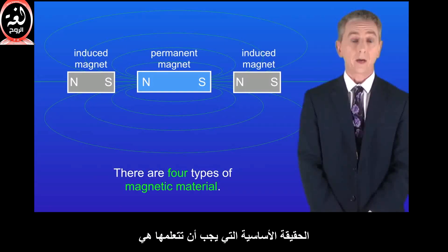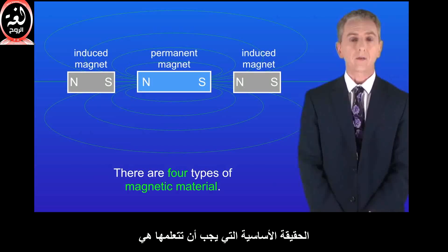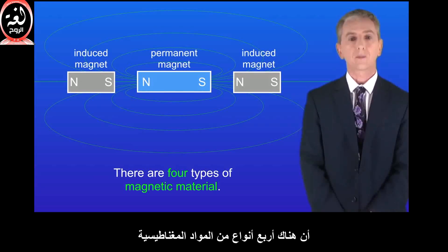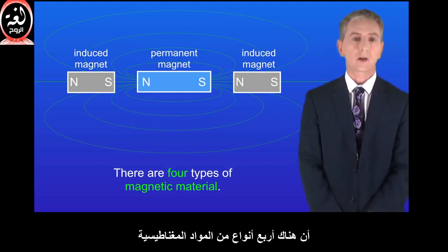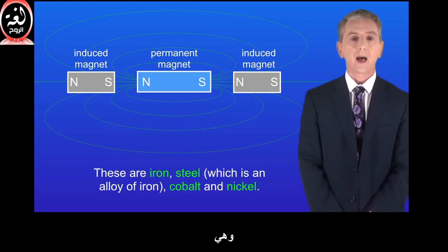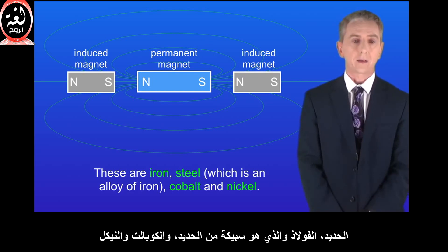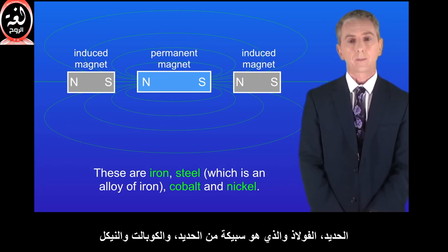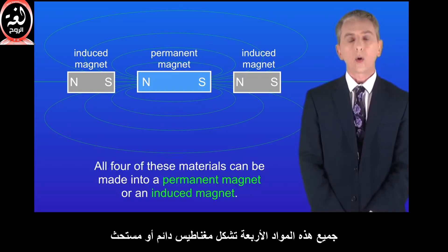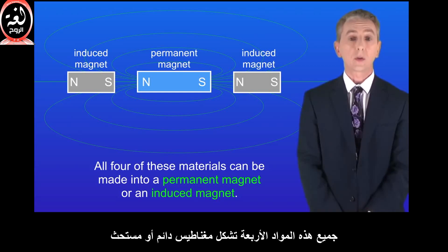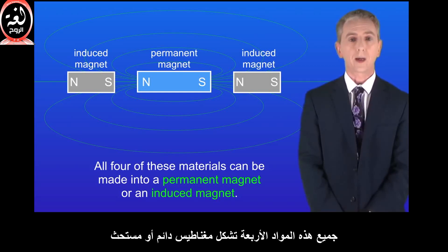A key fact that you have to learn is that there are four types of magnetic material. These are iron, steel (which is an alloy of iron), cobalt, and nickel. All four of these materials can be made into a permanent magnet or an induced magnet.